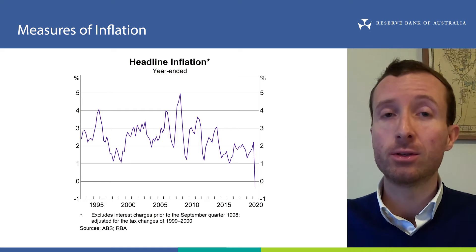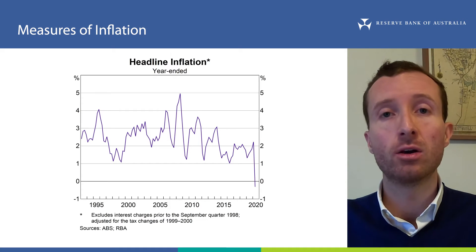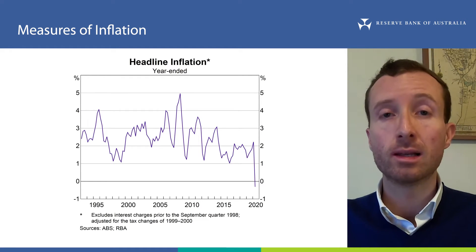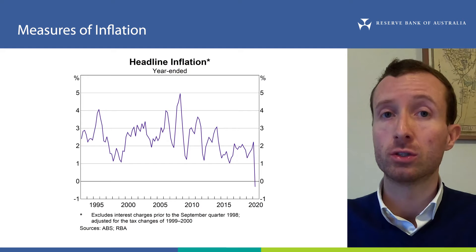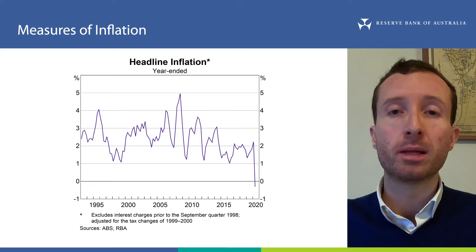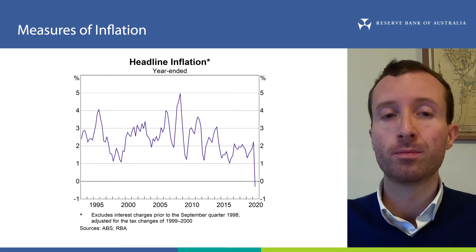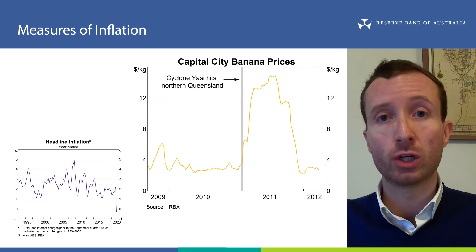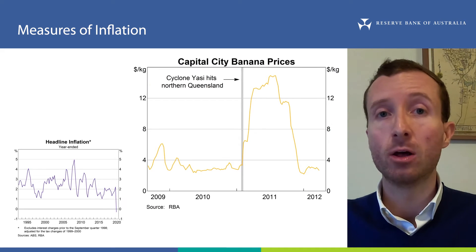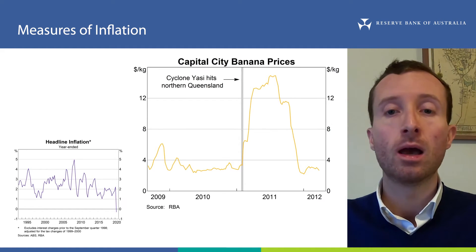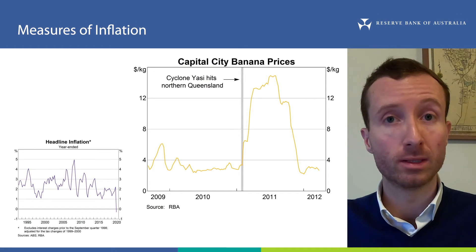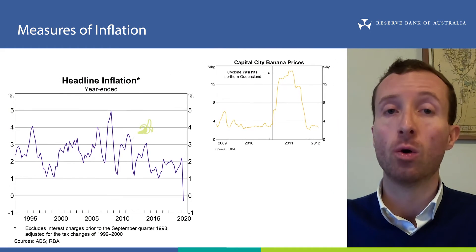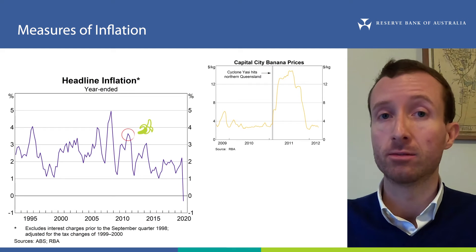This chart shows annual headline inflation in Australia over the past 25 years or so. In 2011, tropical cyclone Yasi destroyed banana crops in Queensland. As a result of this significant reduction in supply, the price of bananas temporarily increased fivefold. You can see it in this other chart, which shows the price of a kilo of bananas in Australian capital cities, and how quickly it increased and then decreased during 2011. This increase was reflected in headline inflation.